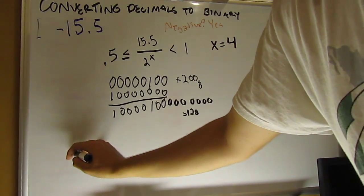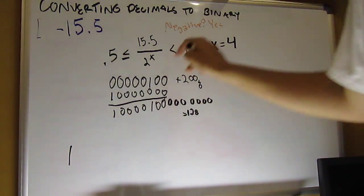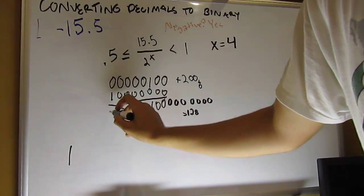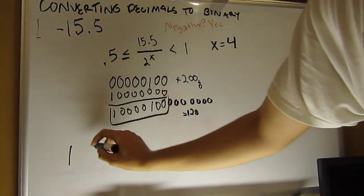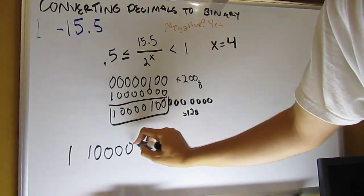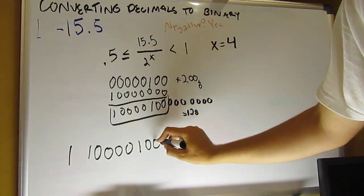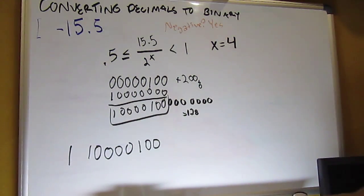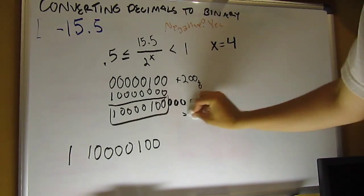So we can start constructing it down here. So we have 1 for the sign bit, and then we have our 8-bit word here. So 10000100, 8 bits. Now we have to make our mantissa here.